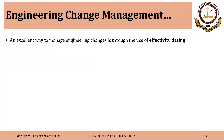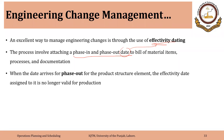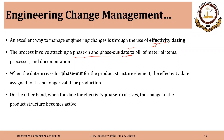How does the bill of material help us? An excellent way to manage engineering changes is through the use of effectivity dating — an important practice to be used. This process involves attaching phase-in and phase-out dates to bill of material items, processes, and documentation. When the phase-out date arrives for a product structure element, it is no longer valid for production. On the other hand, when the phase-in date arrives, the change to the product structure becomes active.